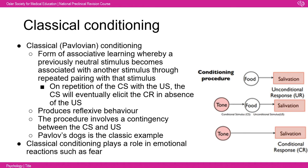Classical conditioning, also known as Pavlovian conditioning, is defined by the experimental procedure that results in change. It's a form of associative learning whereby a previously neutral stimulus becomes associated with another stimulus through repeated pairing. On repetition of the conditioned stimulus with the unconditioned stimulus, the conditioned stimulus will eventually elicit the conditioned response in the absence of the unconditioned stimulus.